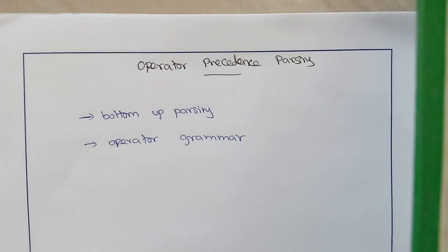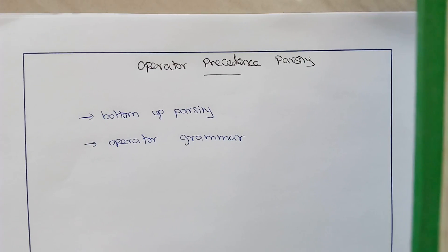Hello everyone. This session will cover what operator precedence parsing is. Operator precedence parsing is a type of bottom-up parsing and is very specific to an operator grammar. Operator grammar is used for arithmetic expression types of things, and it is a kind of context-free grammar which has some limitations.